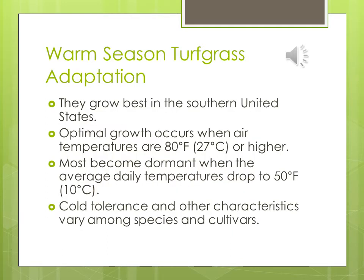Warm season turf grass adaptation: they grow best in the southern United States — from Florida up to about where we're located. Optimal growth occurs when air temperatures are 80 degrees or higher. Most become dormant when average daily temperatures drop to 50 degrees, causing these warm season grasses to turn brown — a characteristic many people do not like, which is why they favor cool season grasses in our area.